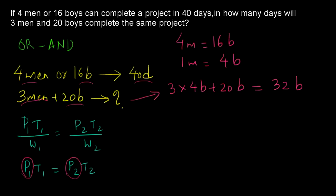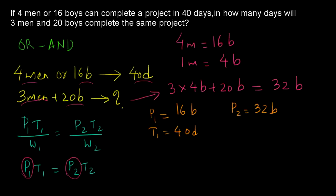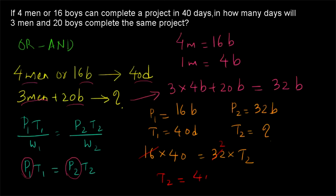Now the problem is direct. P1 = 16 boys, T1 = 40 days, P2 = 32 boys — both in the same unit. T2 is what we need to find. Substituting: 16 × 40 = 32 × T2. Simplifying: T2 = 40 ÷ 2 = 20 days.